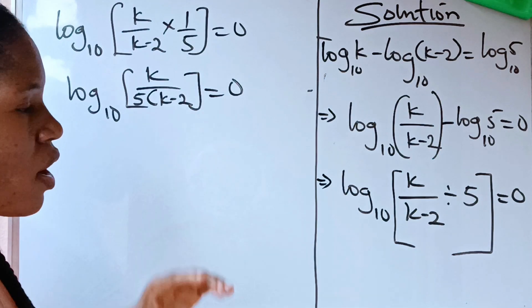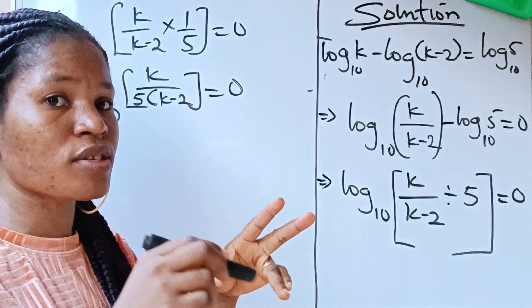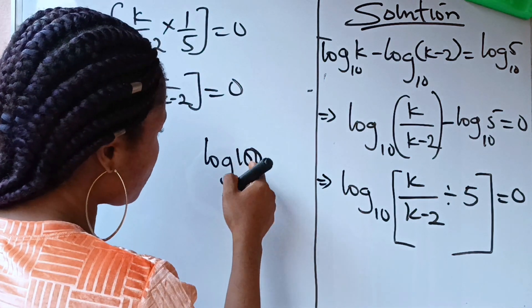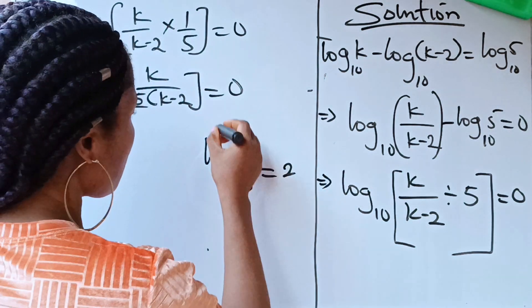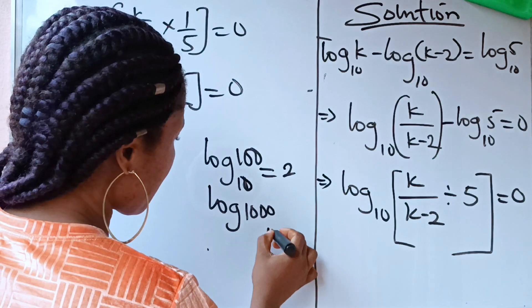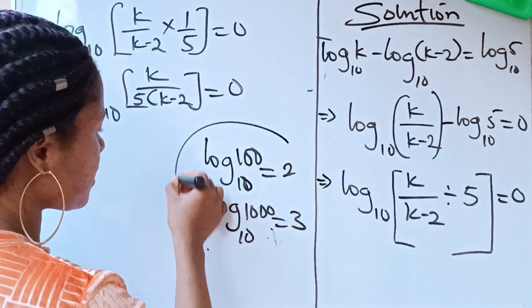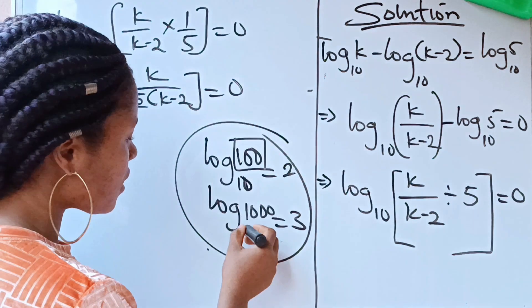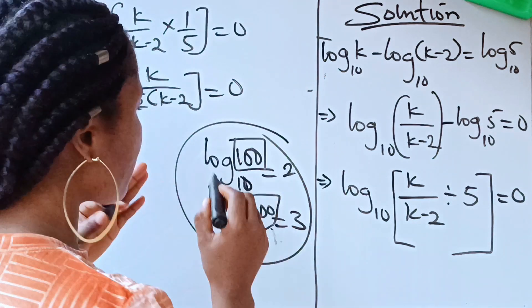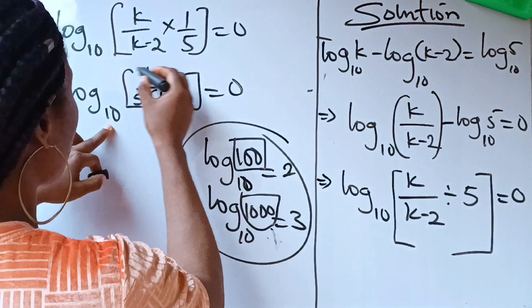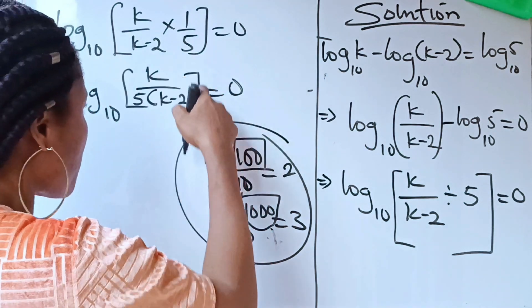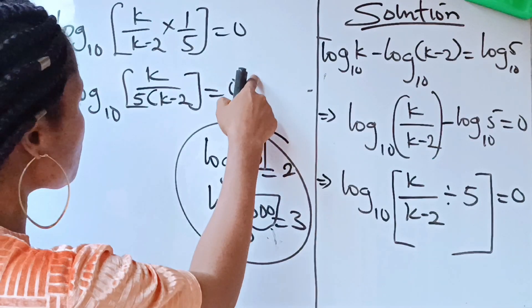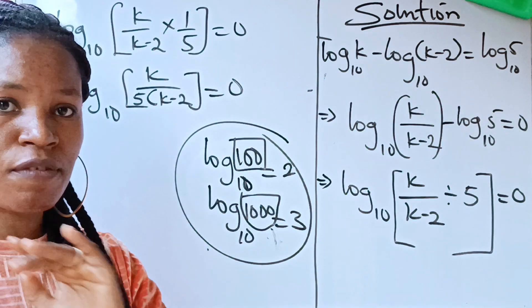Let me bring logarithms back to their roots so you understand the next step. You know that log 100 base 10 equals 2, and log 1000 base 10 equals 3. This tells you that 10 raised to the power 2 gives 100, and 10 raised to the power 3 gives 1000. So 10 raised to the power of zero should give us everything inside the log, and the logarithm will be left out.